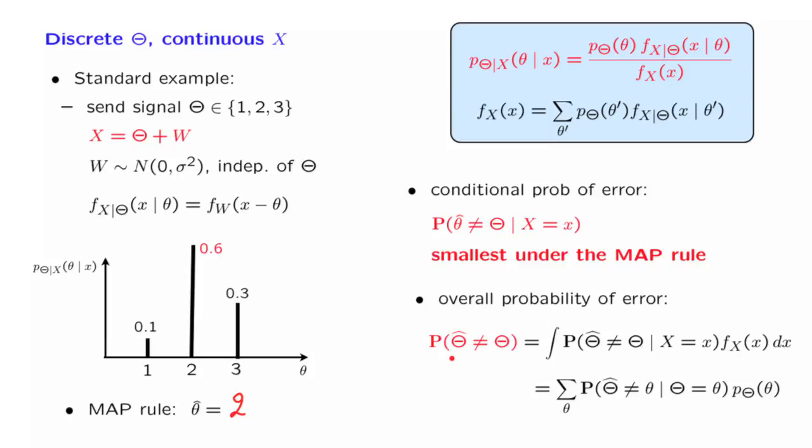And then we can continue similarly, and talk about the overall probability of error, which can be calculated using the total probability theorem in two ways. One way is to take the conditional probability of error for any given value of x, and then average those conditional probabilities of error over all the possible choices of x. Because x is now continuous, here we're going to have an integral.